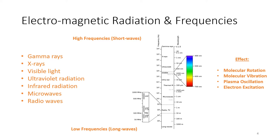On the left you can see the list of electromagnetic radiation from high frequency shortwave — mostly natural causes — to the low frequency radio waves and microwaves that are man-made. The effect of all of the electromagnetic radiation is molecular rotation, vibration, plasma oscillation, and most importantly for electrical systems, electron excitation. All of these things can result in equipment failing.